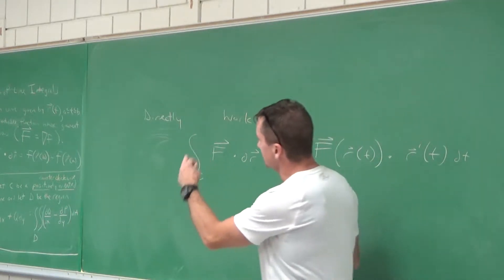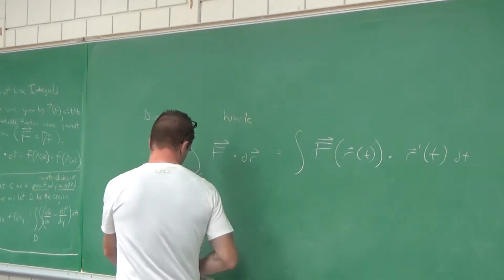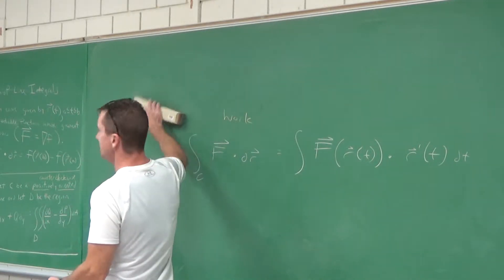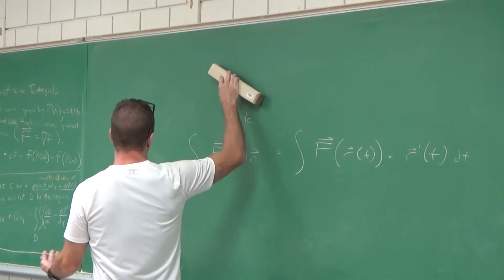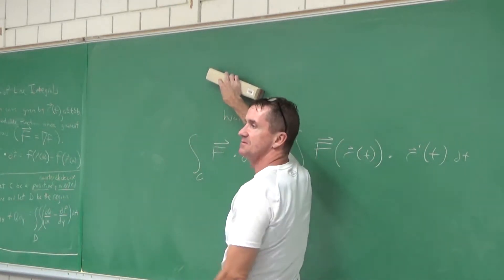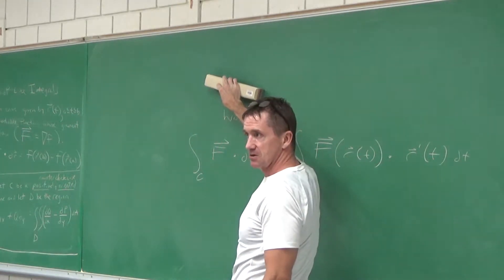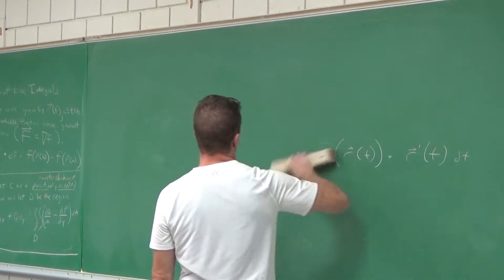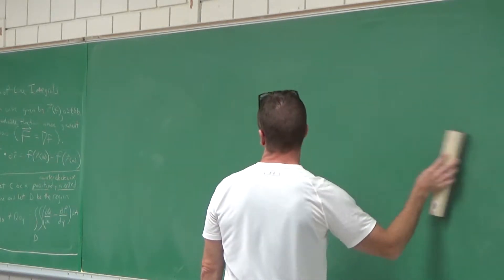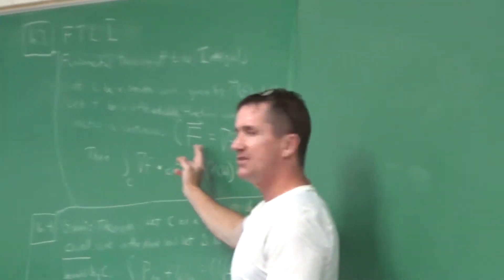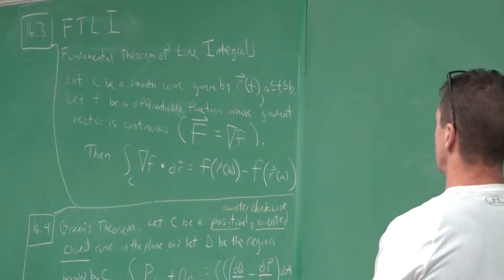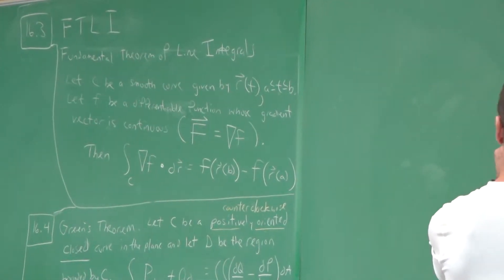Section 16.3, the fundamental theorem of line integrals, and then 16.4, Green's theorem. These are special theorems that make this work a lot easier in certain circumstances. When can I use the fundamental theorem of line integrals? We need to make sense of this.